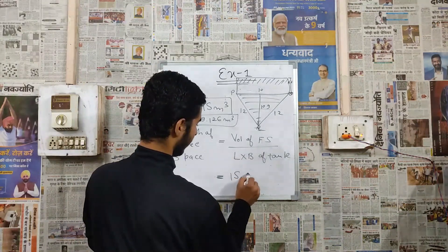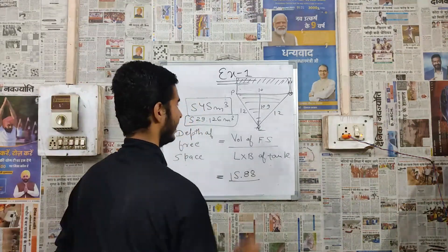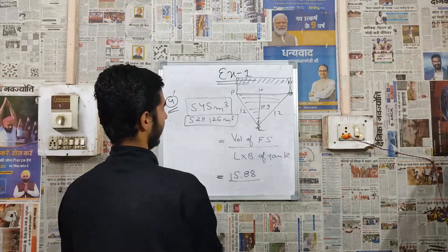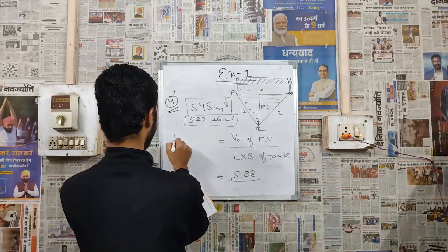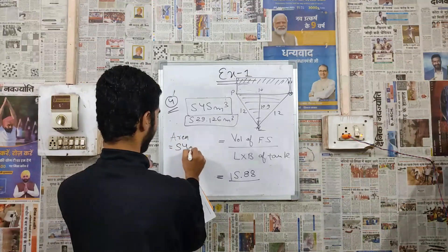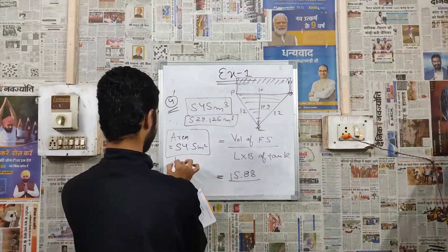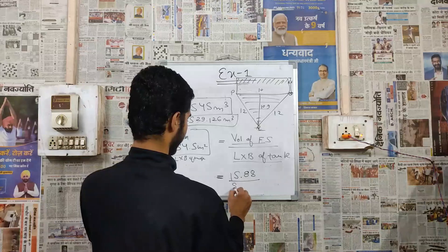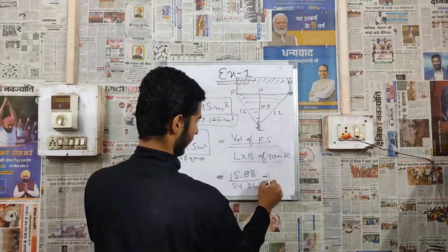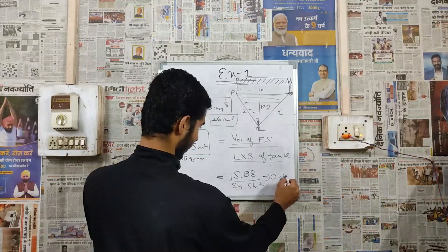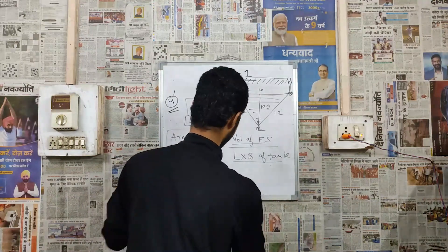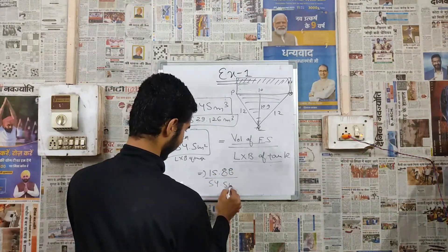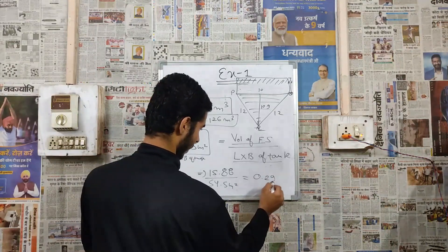Volume of free space is 15.88 cubic meters divided by the length × breadth of the tank. The area of the triangular base is 54.5 square meters, which is our L × B. So ullage = 15.88 ÷ 54.5 = 0.291 meters.